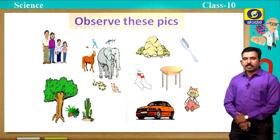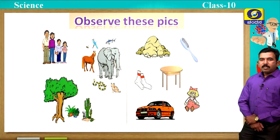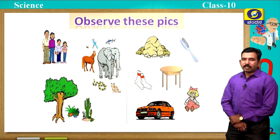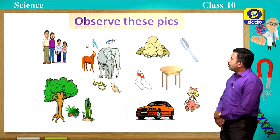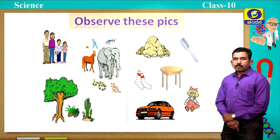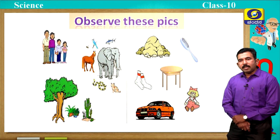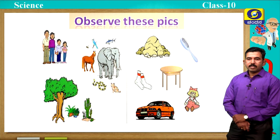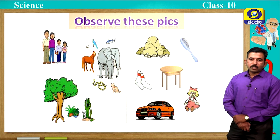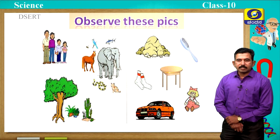Students, observe these pictures. What are you going to observe here? The first group is a group of living things and the second group consists of non-living things. Something that is having life is called as alive. In simple terms, alive means having life. Those living organisms which are having life are called as living things.